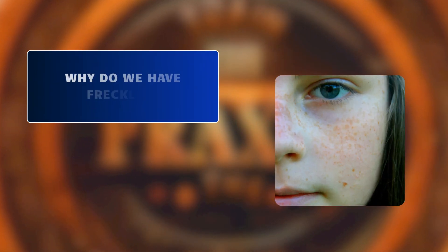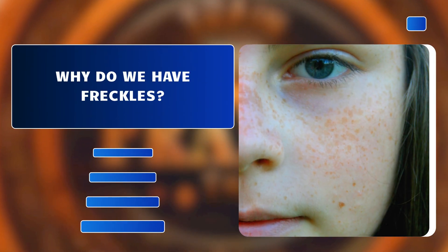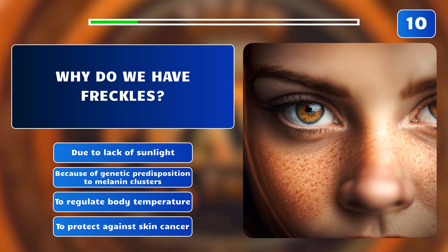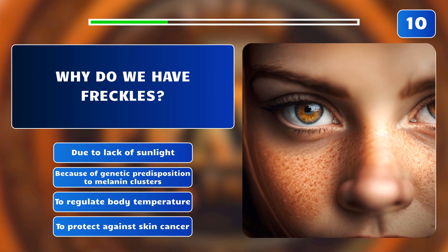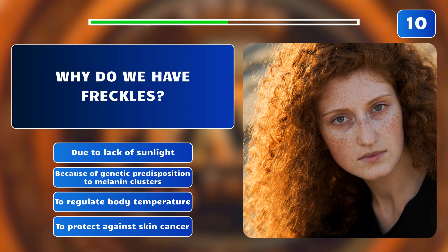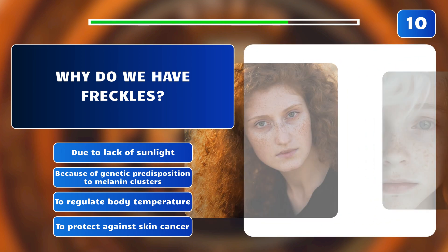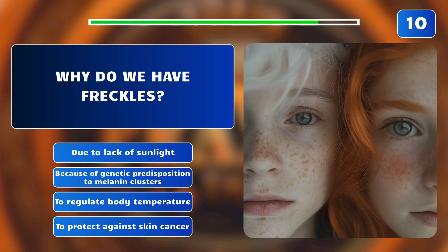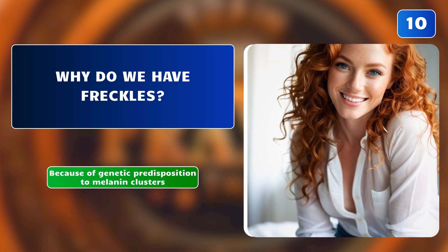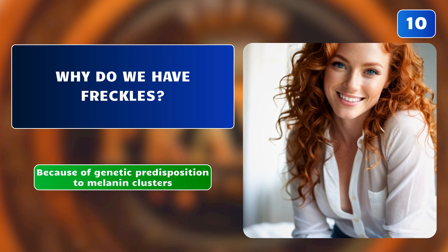Why do we have freckles? Due to lack of sunlight? Because of genetic predisposition to melanin clusters? To regulate body temperature? To protect against skin cancer? The correct answer is: because of genetic predisposition to melanin clusters in the skin.